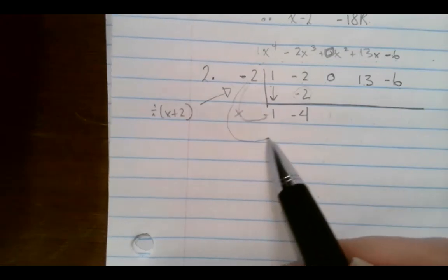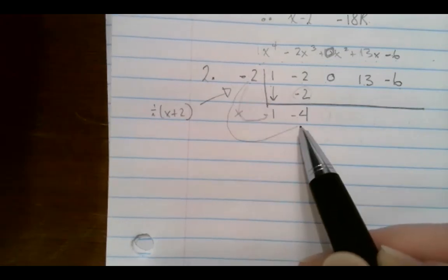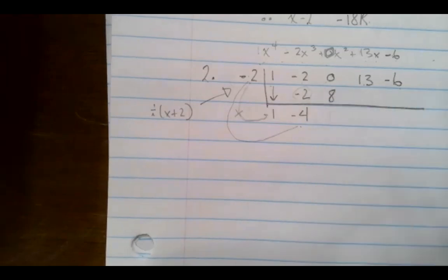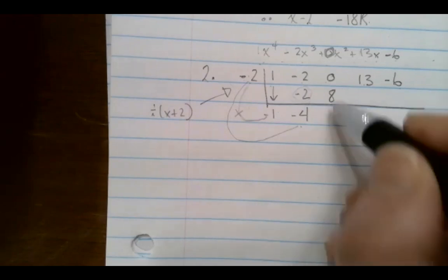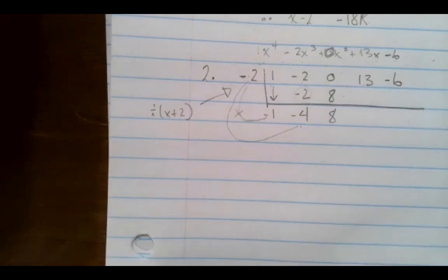Then I add those and get negative 4. Now I do the same thing here. Negative 2 times negative 4. And then if I add, I would get 8.